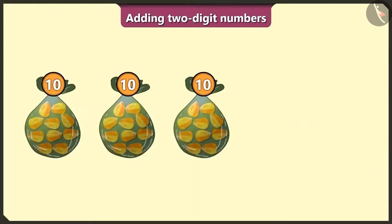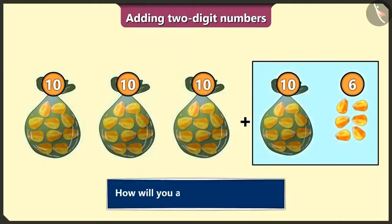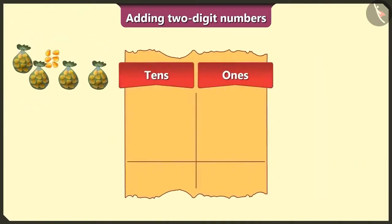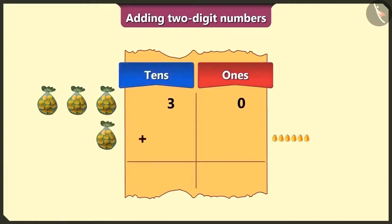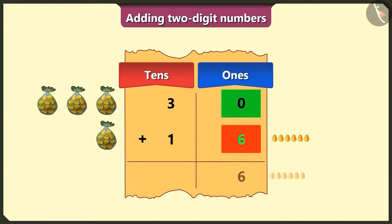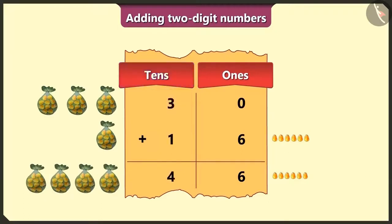Now see — here are 30 grains. To these, I will add 16 more. So how do we add 30 and 16? To write number 30, we will write 3 in the tens box and 0 in the ones box. To add 16 to 30, write 1 in the tens box and 6 in the ones box. Now, first in the ones box, we will add the numbers 0 and 6 — that will give us 6. Now in the tens box, we will add the numbers 3 and 1, the total of which will be 4.